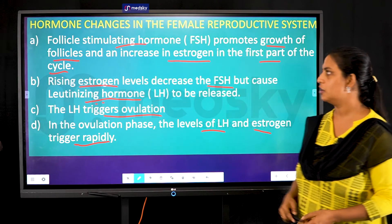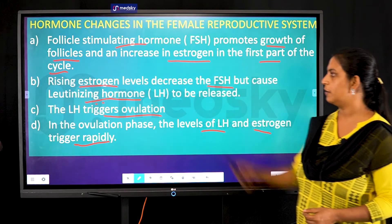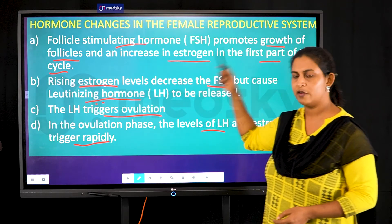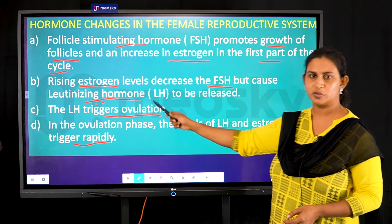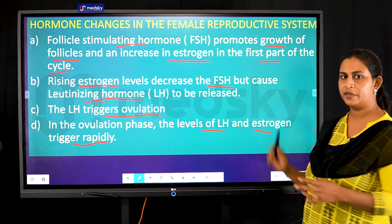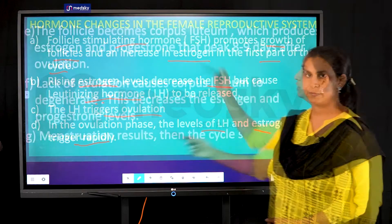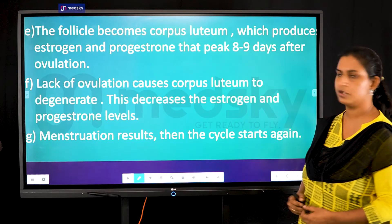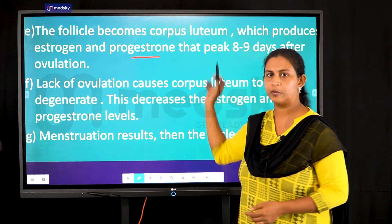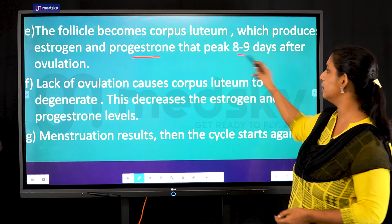During the ovulation phase, levels of LH and estrogen increase rapidly. FSH acts on the ovaries to produce follicles; once estrogen rises, FSH decreases and LH increases. The follicle then becomes the corpus luteum, which produces both estrogen and progesterone, occurring between eight and nine days after ovulation.